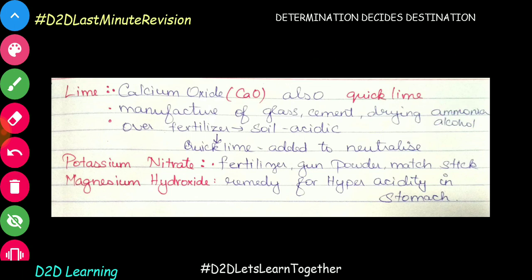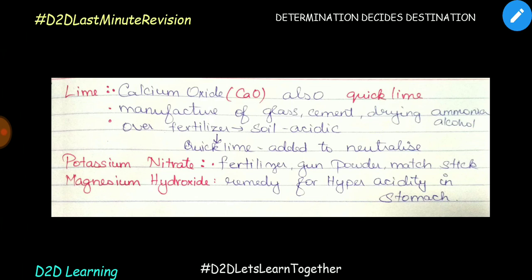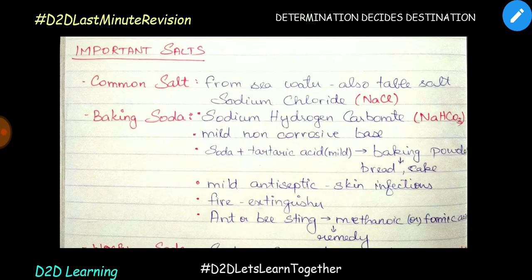Magnesium hydroxide — when acidity is developed in the stomach, if you add magnesium hydroxide, it will neutralize it. Something like milk of magnesia. When you have different conditions and excess acidity, magnesium hydroxide can help. So if you use magnesium hydroxide, it treats acidity.